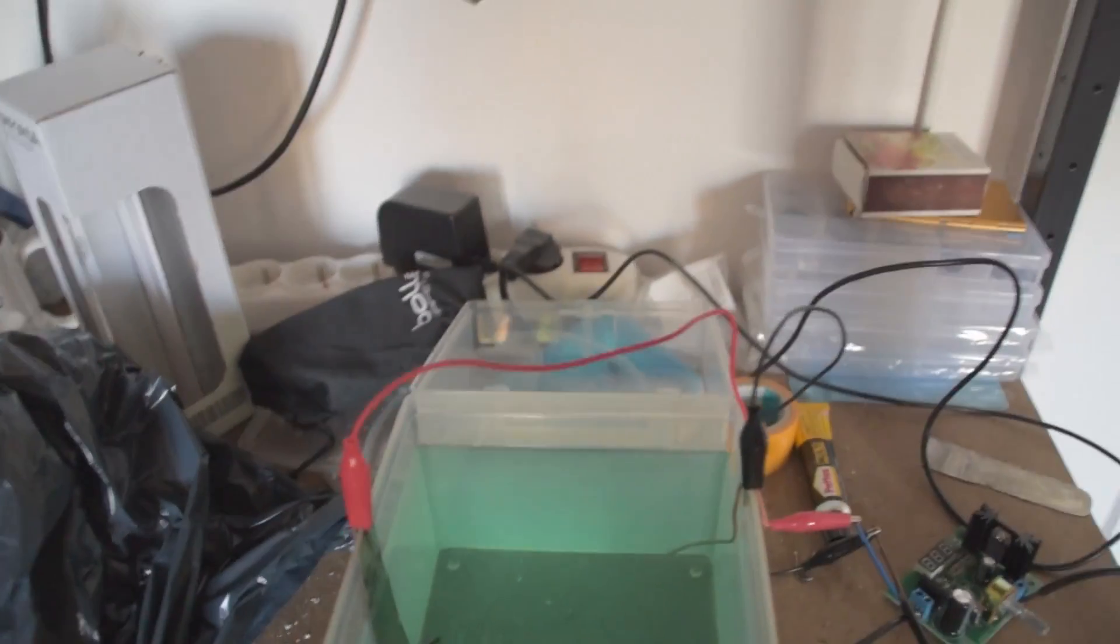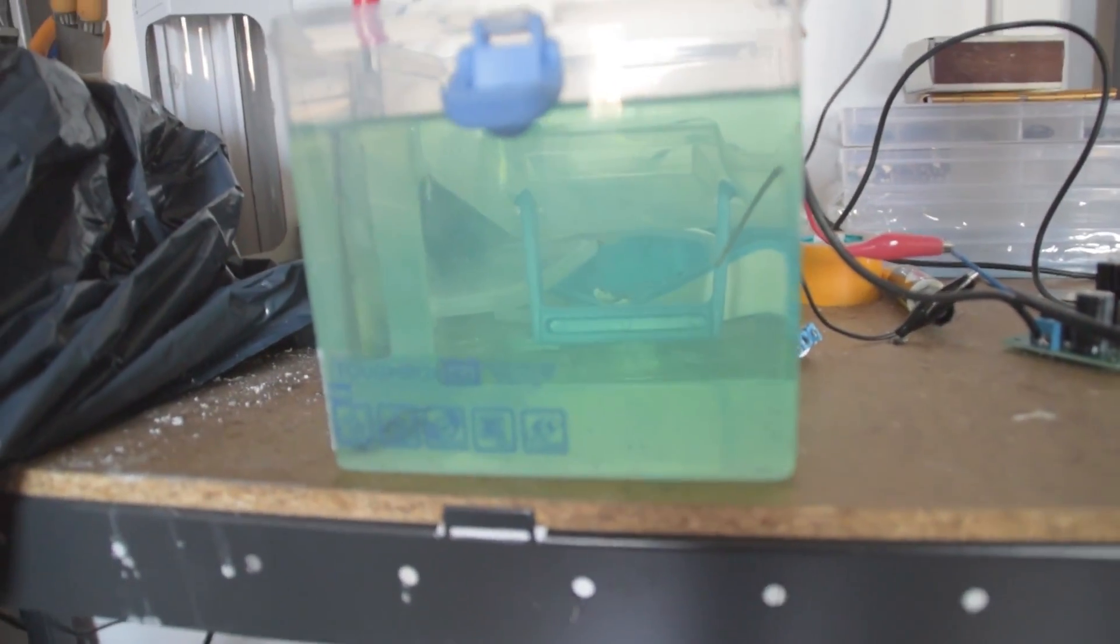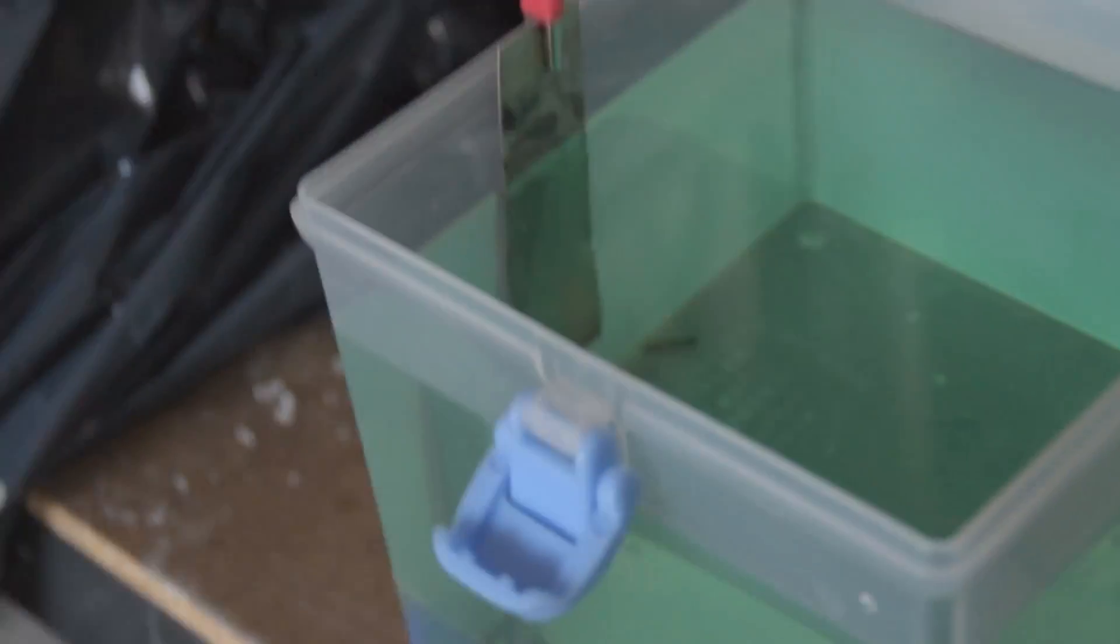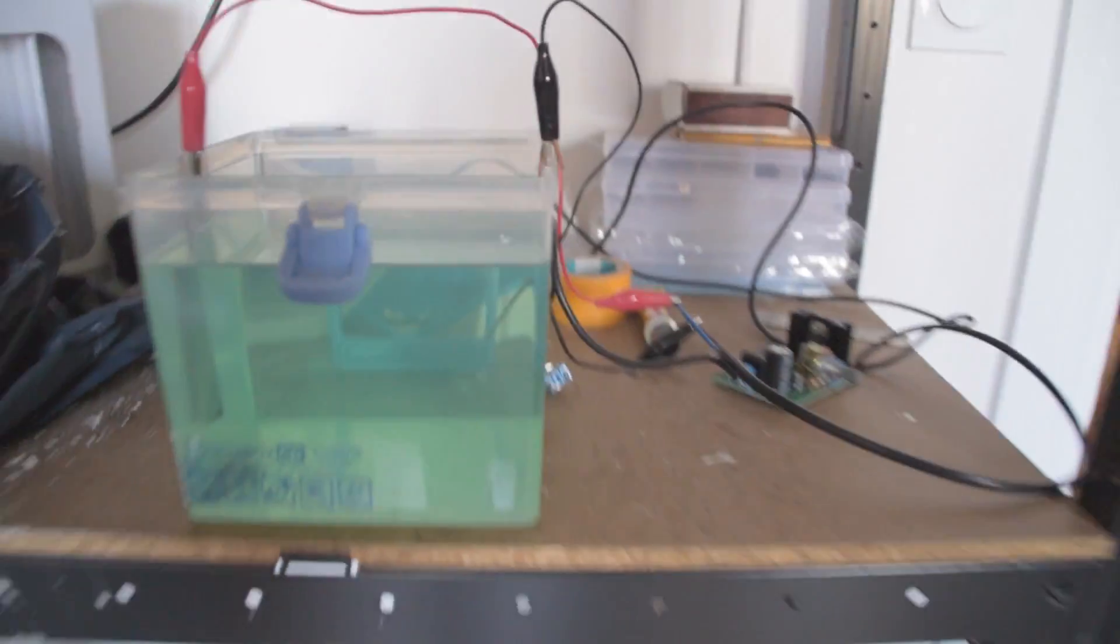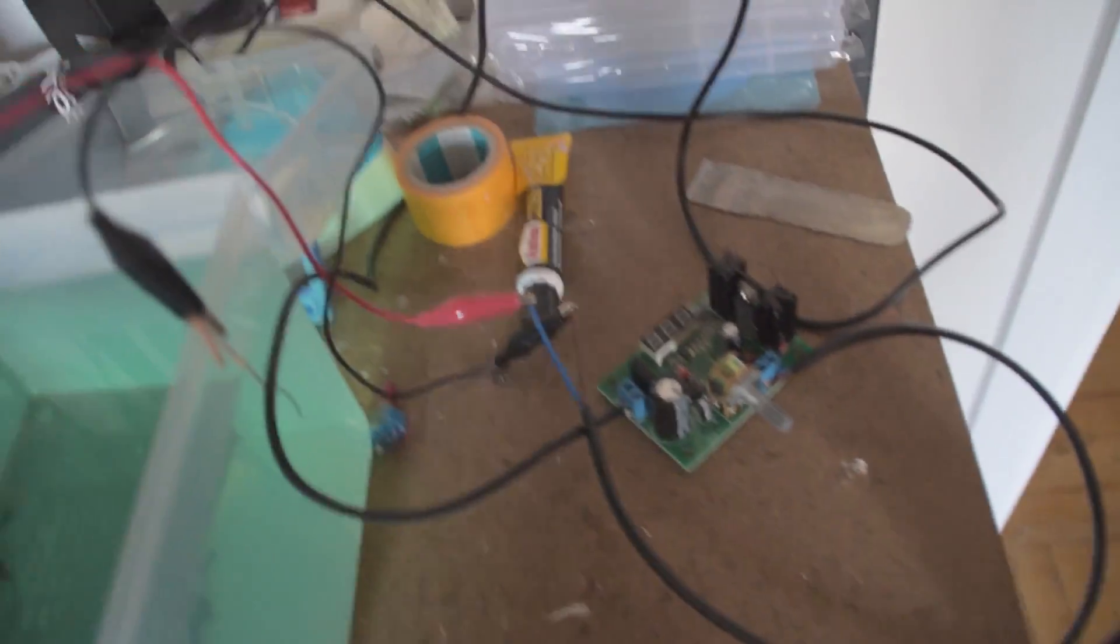Alright, so here my nickel acetate solution is done. On the positive lead I have a piece of nickel sheet, and on the negative lead I have a piece of copper wire. This is a test to see how the reaction goes. I have my power supply connected.